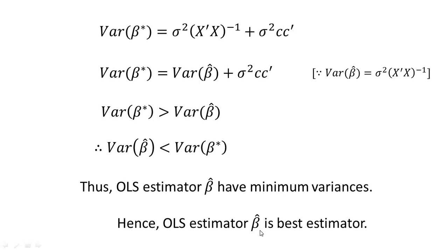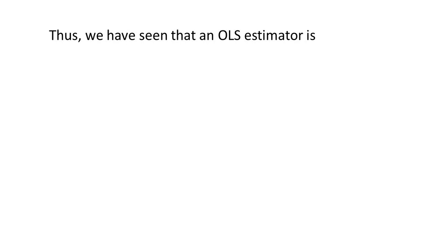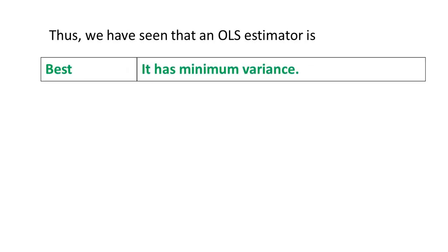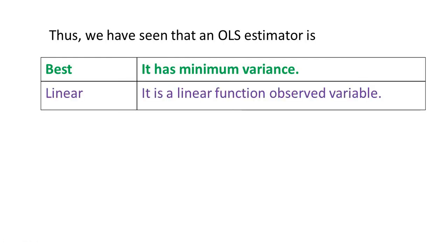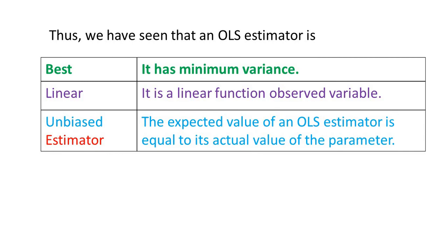Hence, the OLS estimator β̂ is the best estimator. We have proved that the OLS estimator is Best because it has minimum variance, Linear because it is a linear function of the observed variable y, and Unbiased because its expected value equals the true parameter β. Therefore, the OLS estimator β̂ is Best Linear Unbiased Estimator, or BLUE. Thank you.